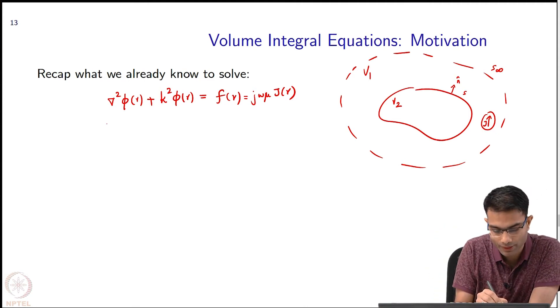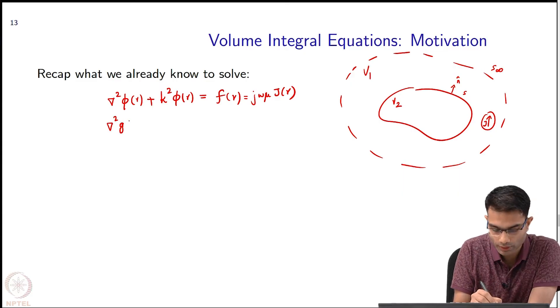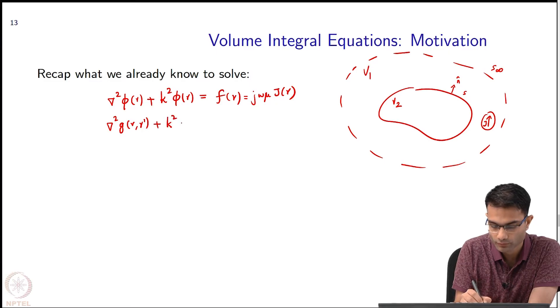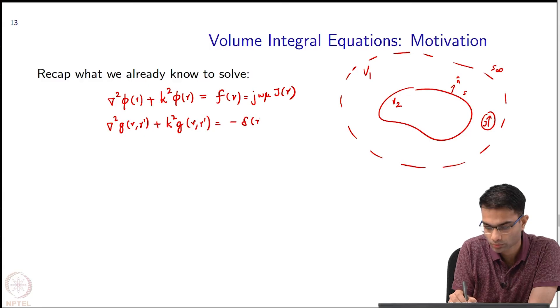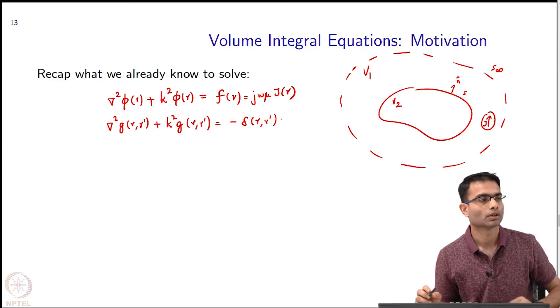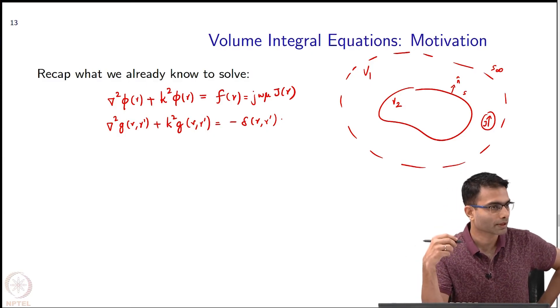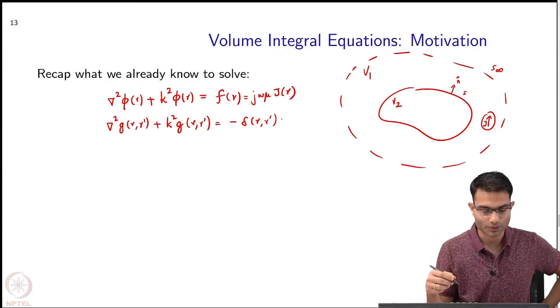This equation we have seen it many times by now, we will call this the Helmholtz equation. Then we said how do we solve this? To solve this we invented one new function we called it the Green's function. I said if I can find out this Green's function I can solve this problem, and that was the impulse response idea.